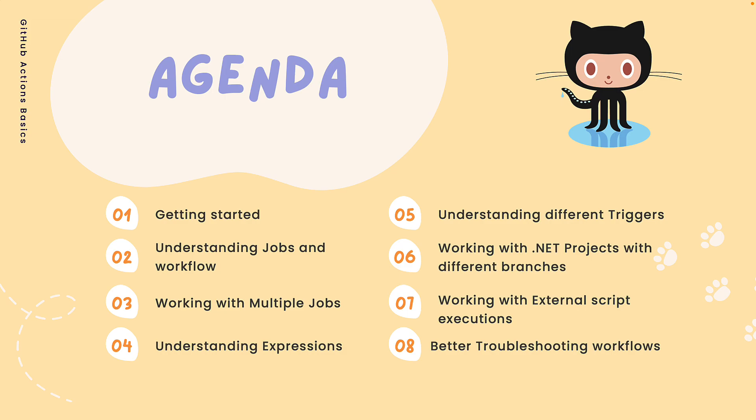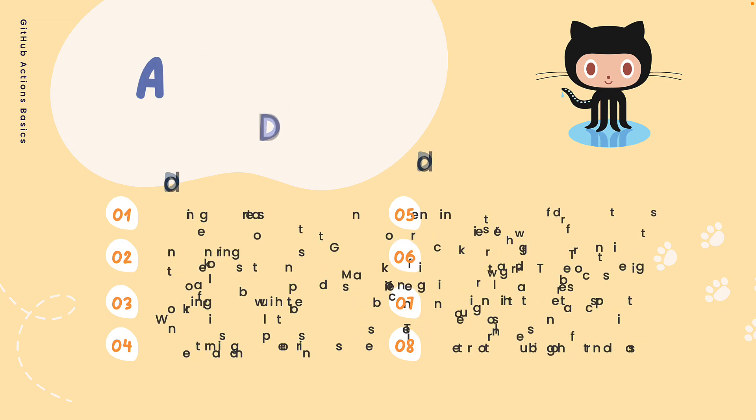We'll also work with a .NET project with different branches, covering how pull and push triggers work and how to build and test a .NET application. We'll work with external script executions using .sh or bash files, and finally cover troubleshooting workflows when you get stuck with pipelines. That's the basics of this GitHub Actions course.